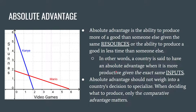Absolute advantage simply asks: given the same amount of resources, who can produce more of a good or service — who has the ability to produce the absolute largest quantity? When a country has an absolute advantage, it means they can produce more given the exact same amount of inputs. However, when deciding what to specialize in, a country should not weigh absolute advantage — comparative advantage is what we need to focus on to reach maximum efficiency with trade partners.